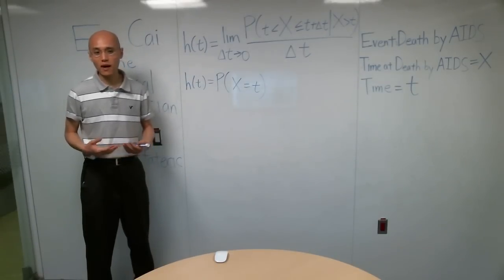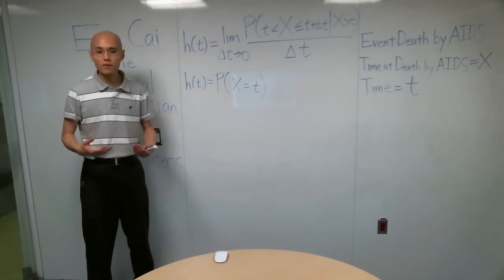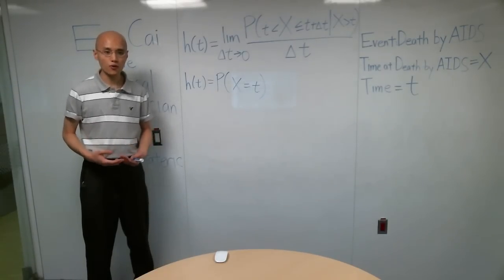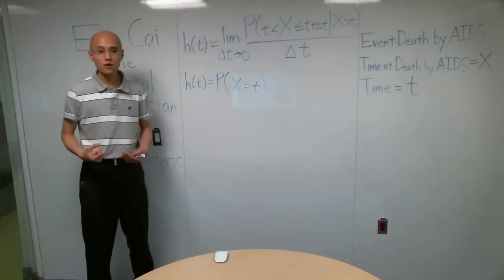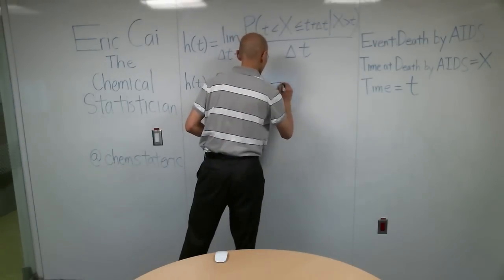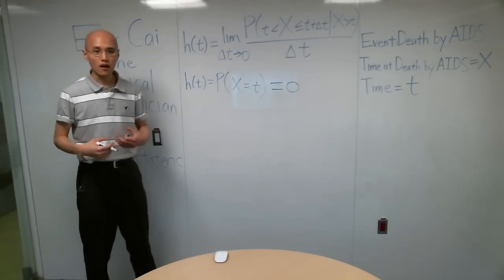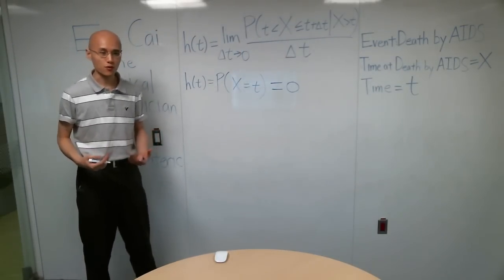Unfortunately, if you remember from mathematical statistics or probability theory, the probability of a continuous random variable equaling a particular value is equal to zero. So this definition of the hazard function is not useful to us.